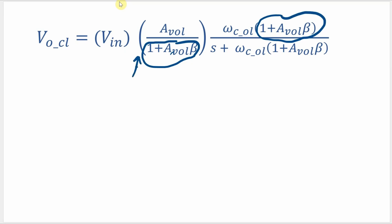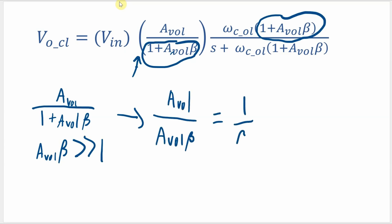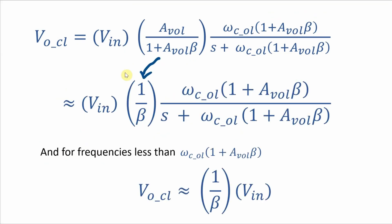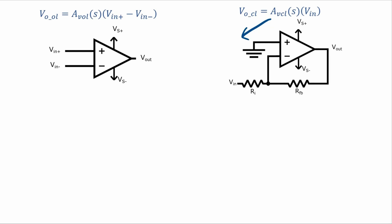Another thing to point out: if AOL·β is much larger than 1, then the closed-loop gain equation simply becomes AOL over (AOL·β), which is equal to 1 over β. So for frequencies less than the cutoff frequency of the closed-loop circuit, the output voltage will be approximately equal to (1/β) times the input voltage. Going back to the inverting and non-inverting amplifiers, that 1/β term is (1 + R2/R1) for the non-inverting amplifier, and negative Rf over Ri for the inverting amplifier.